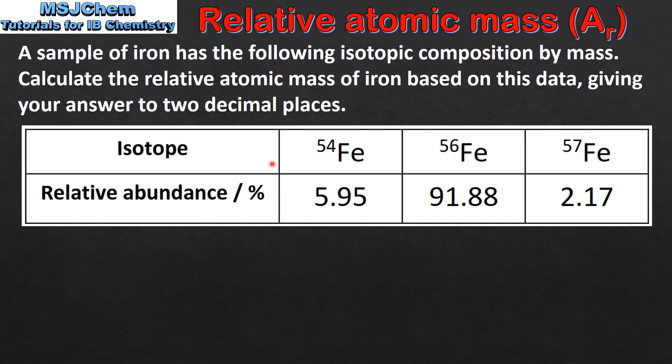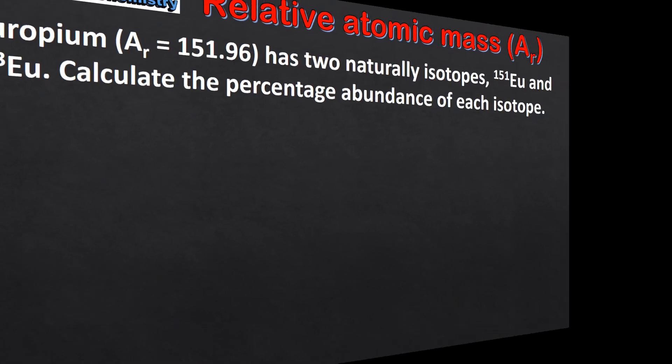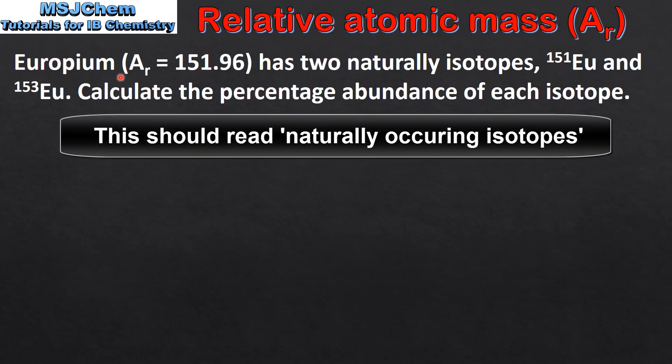We have three isotopes of iron: iron-54, iron-56, and iron-57. To calculate the relative atomic mass from the data given we multiply the mass number of each isotope by its relative abundance, add them together, and divide by 100. This gives us a relative atomic mass of 55.90.